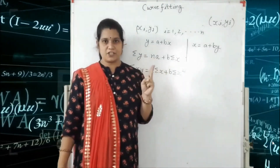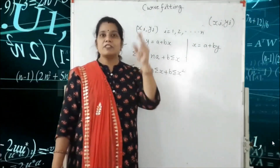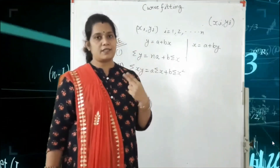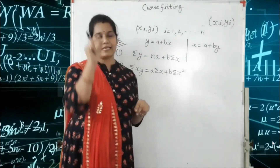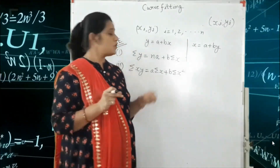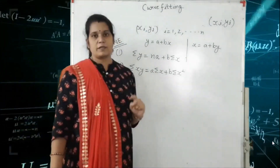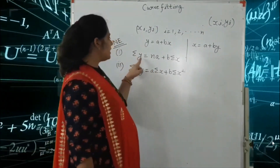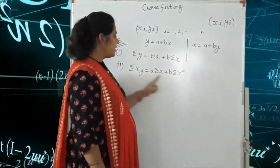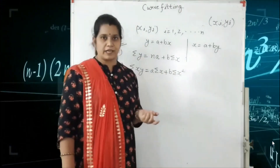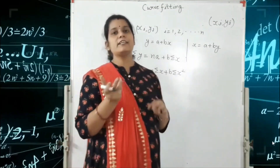With the help of these two normal equations, we find the values of the two unknowns A and B. If we are given the problem with values of X and Y, we first mark the columns of XY and X square, because we need the values of summation Y, summation X, summation XY, and summation X square. All the normal equations contain only A and B.